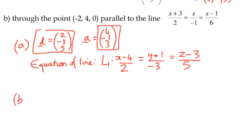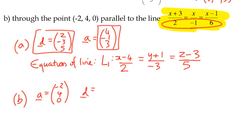If we look at example B, we're told that we want to find the equation of a line through the point negative two, four, zero. So that becomes our A point: A equals negative two, four, zero. And we're told it's parallel to this line here. So we're not given some random direction vector, we're told it's parallel to another line. But of course, the direction vector of that line is staring us in the face, it's here. So we can say quite easily that the direction vector of both lines is two, negative one, six.